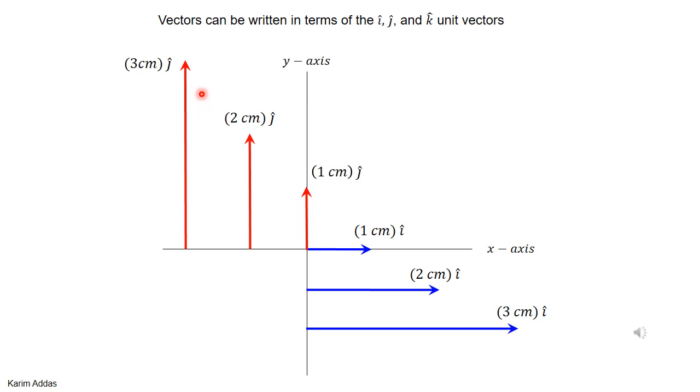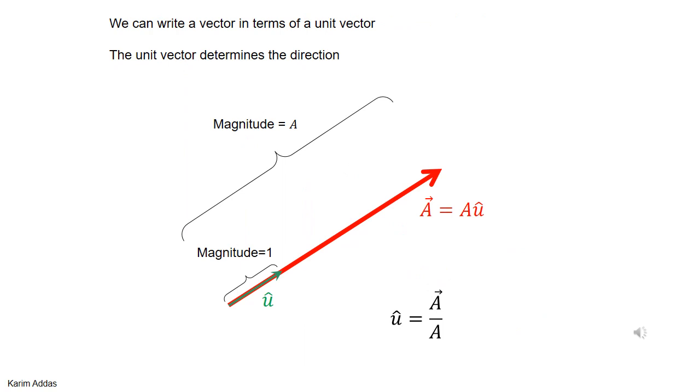So you can form vectors in terms of the unit vectors, write them in terms of unit vectors. Any vector A can be written as a magnitude multiplied by a unit vector. The unit vector is the vector divided by the magnitude. It has magnitude one.